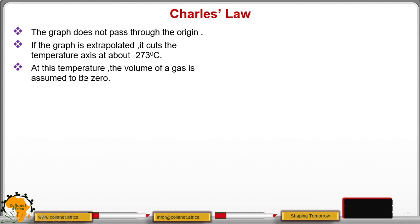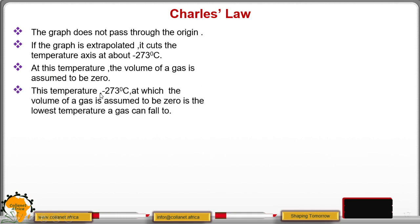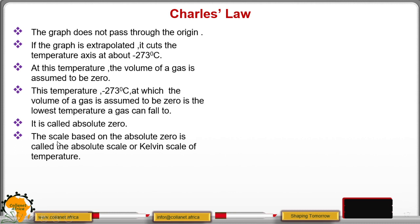That is what we have here. At this temperature, the volume of a gas is assumed to be zero. We are extrapolating and it is cutting the temperature axis at negative 273. So at that particular point, the volume is assumed to be zero. This negative 273 is the lowest temperature a gas can fall to, and we call it absolute zero. The scale that is based on absolute zero, we call it the absolute scale or Kelvin scale of temperature.